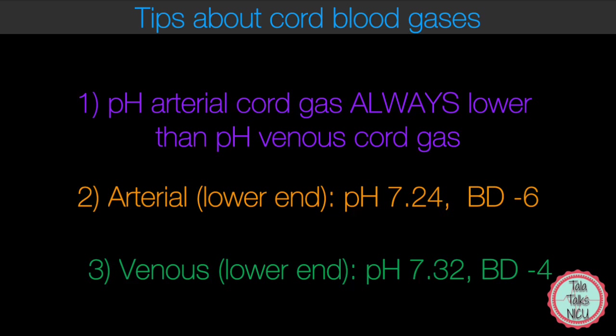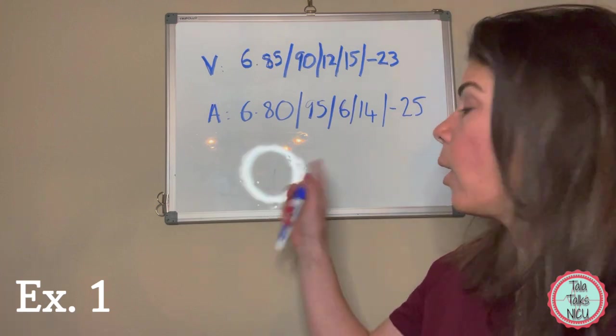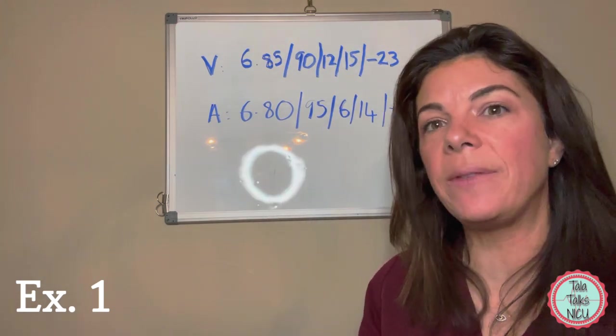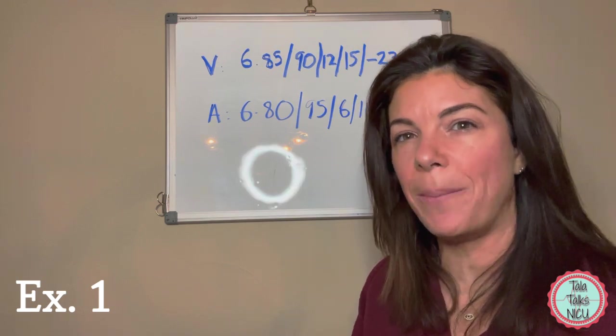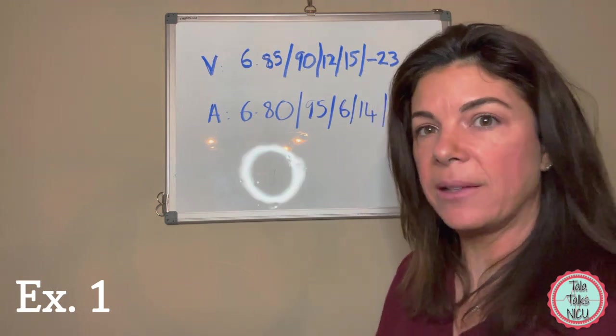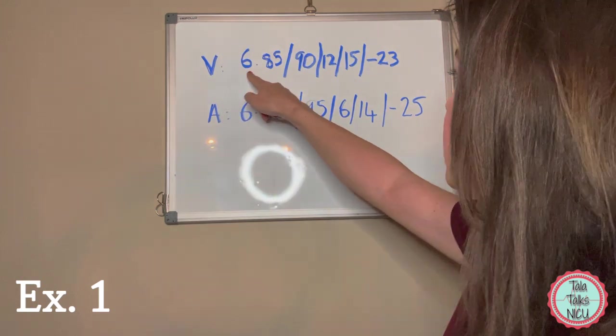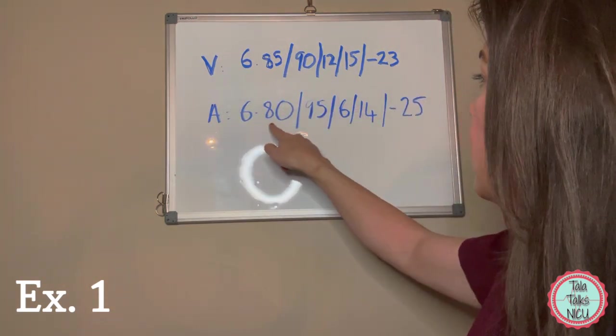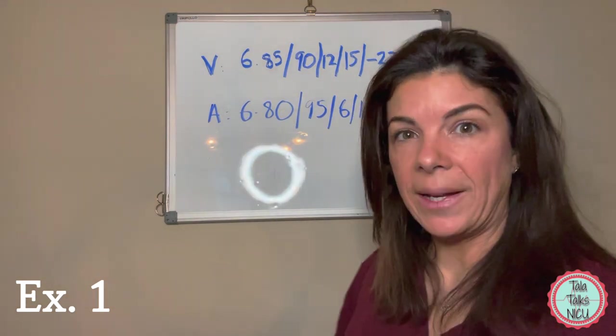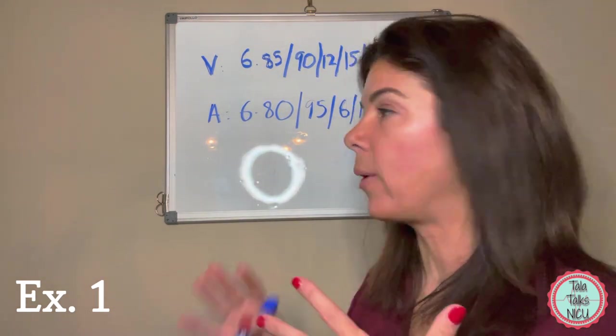Let's go over the first example. I'm going to give these examples to you without any medical background because I don't want the message to get missed. Example 1: the venous is 6.85 with a minus 23 base, the arterial is 6.8 with a minus 25 base.